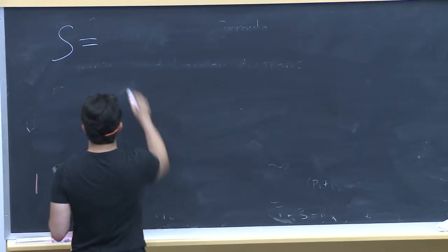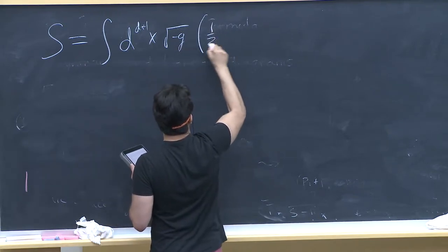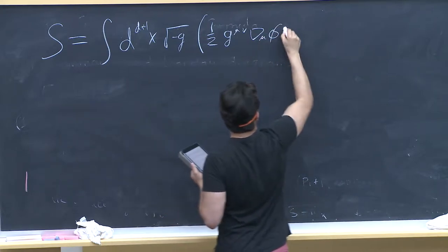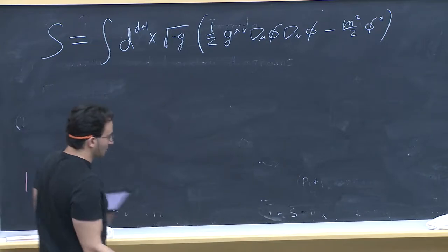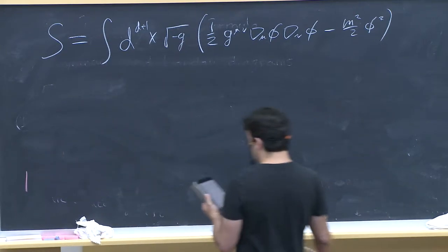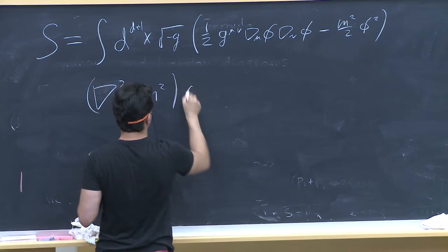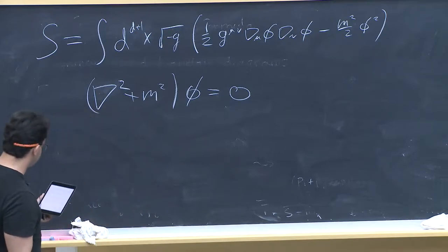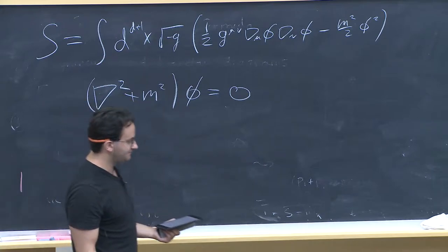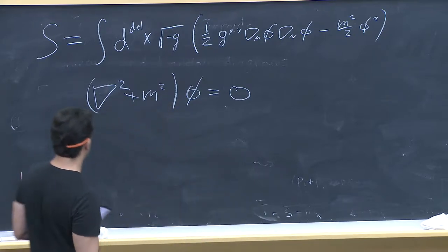If we have a free quantum field theory in AdS, we have some standard free action. We apply the usual procedure from flat space QFT. There's an equation of motion—some ∇² + m² φ = 0—and we want to do a mode expansion in frequency space. We already did that. But to study quantum mechanics, we need to define a canonical momentum and impose that the commutator of the canonical momentum with the field is a delta function.